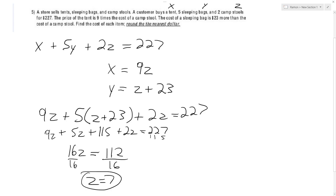So if z equals 7, we just have to plug it into the second and third equation. So x is equal to 9 times 7, which is equal to 63. And y is equal to 9 plus 23, which is equal to 30. Or wait, what? I'm sorry, plus 7. So we got those.